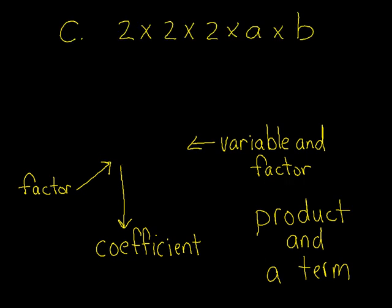On to the letter C. 2 times 2 times 2 times A times B. We can start grouping some things together. 2 times 2 is 4 times 2 times A times B. 4 times 2 is 8 times A times B. And we want to get rid of these symbols here so we don't confuse them with multiplication or the letter X.